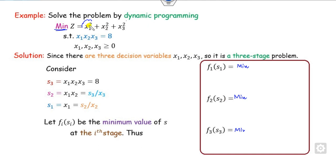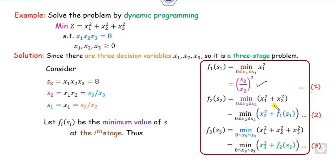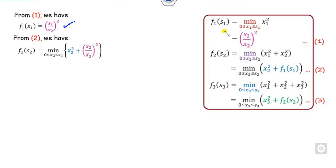We define the functions for minimization in each case. For x1, it corresponds to the variable for x1 only. For x2, it corresponds to x1 and x2 both, and so on. We substitute the value of x1 from here as f1(s1), giving equation one. We then substitute f1(s1) into equation two, noting that from equation one this part is independent of x1, so it remains as such.